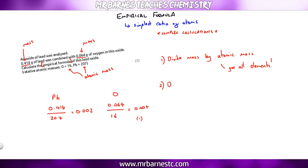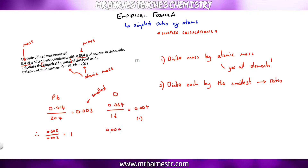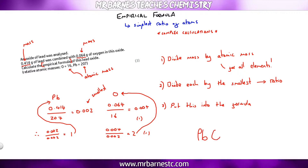The second step is to divide each of those numbers by the smallest number to get your ratio of atoms. The smallest number is 0.002. So 0.002 ÷ 0.002 = 1, and 0.004 ÷ 0.002 = 2. Therefore I have one Pb and two oxygens, giving the formula PbO₂.